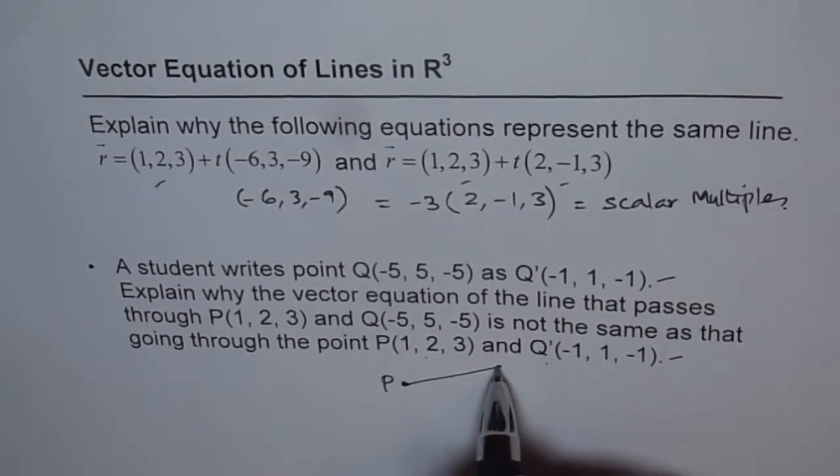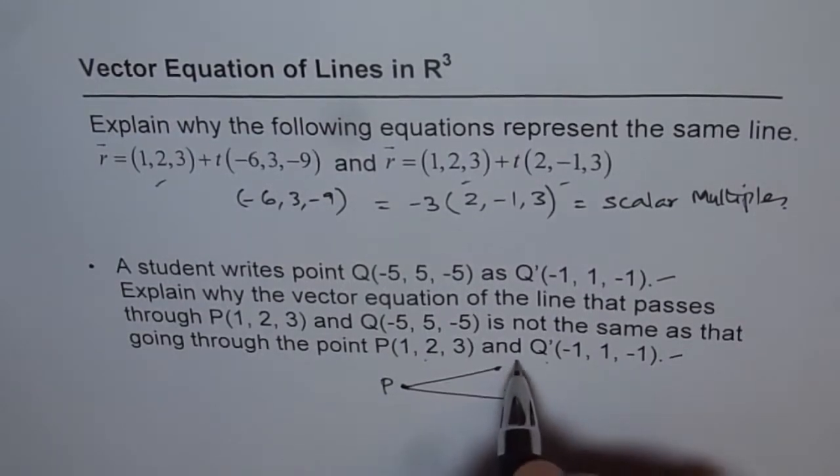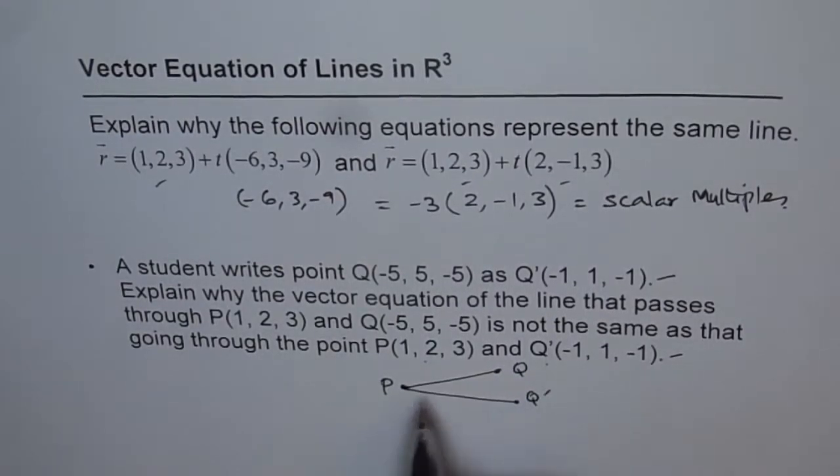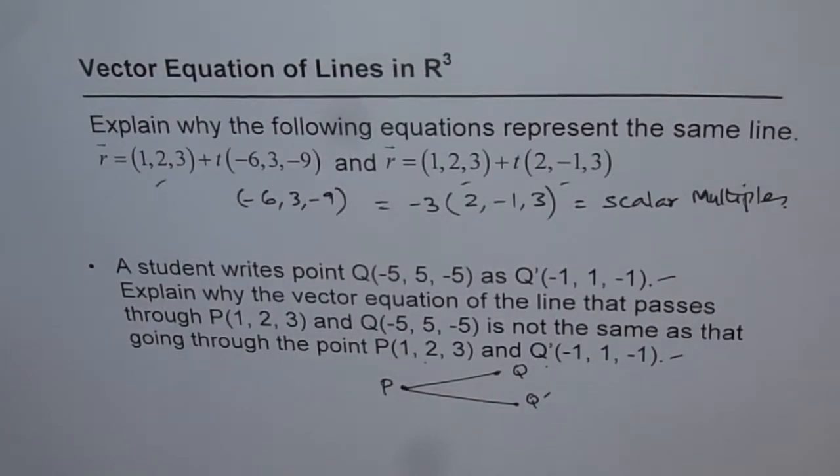So we have a situation here where point P is given to us and we have two different points. One is here, the other one is somewhere else. If you have these points which are different then the lines representing will also be different.